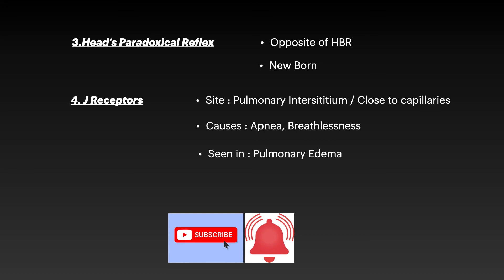The fourth reflex involves J receptors, located in the pulmonary interstitium close to the capillaries. They are mainly activated in pulmonary edema. When fluid leaks out of a pulmonary capillary, it stimulates the nearby J receptor — the 'J' standing for juxtaposition, meaning close to the blood vessel. Activation of the J reflex causes an immediate apnea, followed by breathlessness, hypotension, and bradycardia.